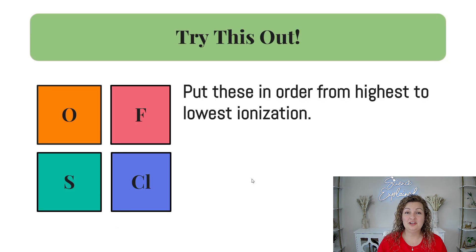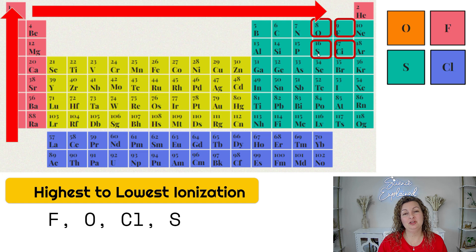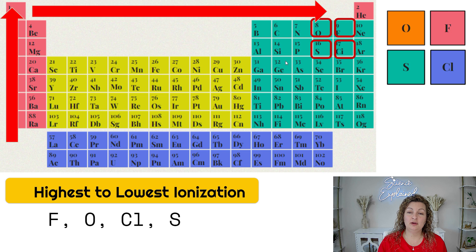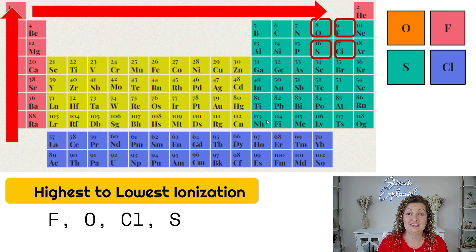Let's try another one. Put these in order from highest to lowest ionization. So we're starting with the highest, which is fluorine, then it goes oxygen, chlorine, and then we end up with sulfur. Remember, you can draw that arrow to the upper right-hand corner or you can just follow the up-and-to-the-right rule — both give you the same answer.